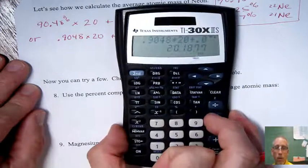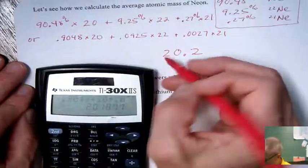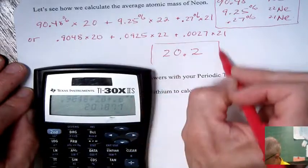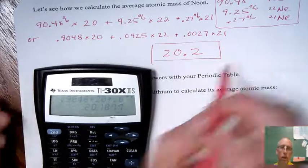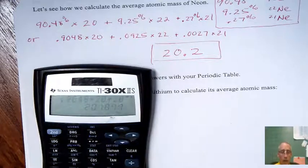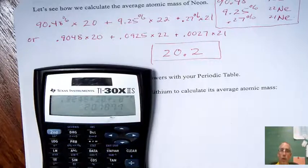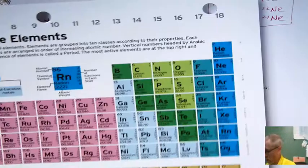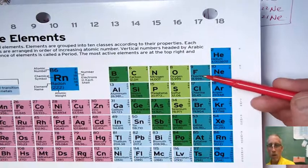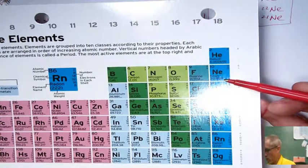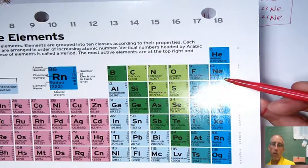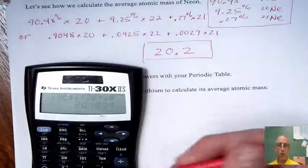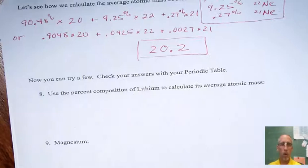This is actually 20.1877, but if I just want one decimal place, 20.2. Now, if you grab a periodic table and look at it, you'll see it's very close to what the periodic table shows for the average atomic mass. They call it the atomic weight of neon. Here's neon. Atomic weight, they call it 20.1797. So they've got a few more decimal places here, but that rounds to 20.2 just the same way.